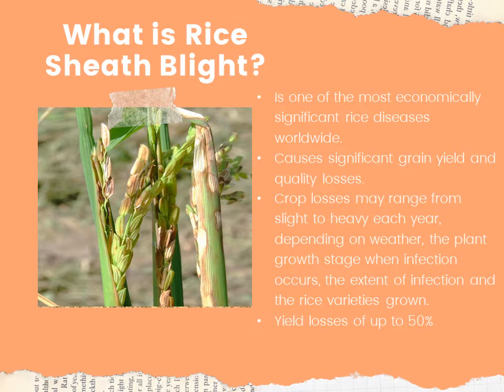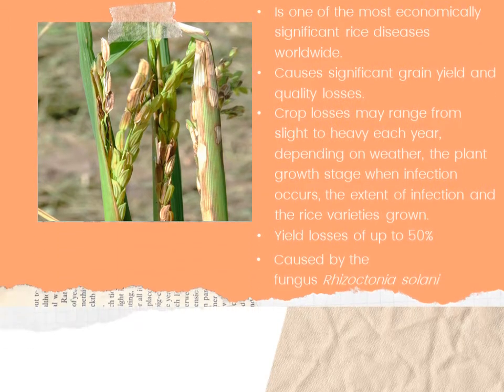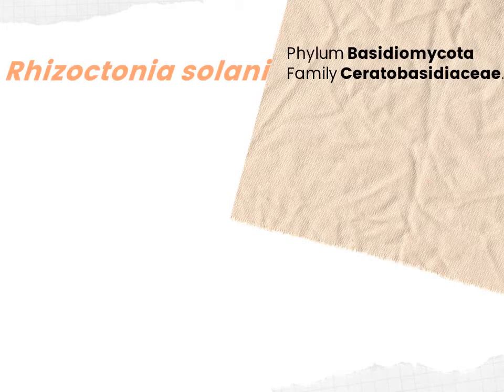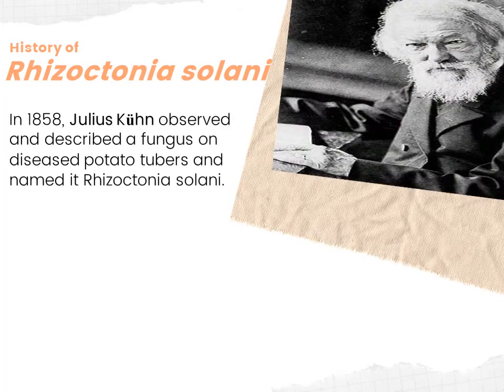Sheath blight is a soil-borne disease caused by the fungus Rhizoctonia solani. The fungus belongs to the phylum Basidiomycota, family Ceratobasidiaceae. In 1858, Julius Cohn observed and described the fungus on diseased potato tubers and named it Rhizoctonia solani.